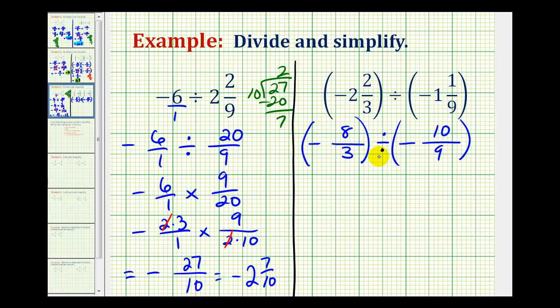Next, we'll convert this division problem to a multiplication problem by multiplying by the reciprocal of negative ten-ninths. So we'll have negative eight-thirds times negative nine-tenths.